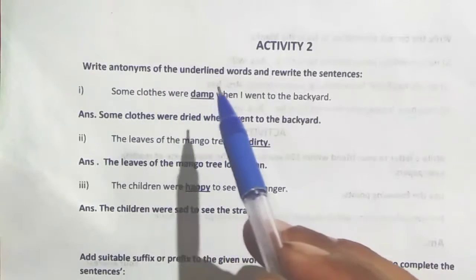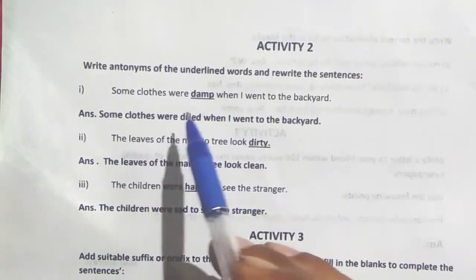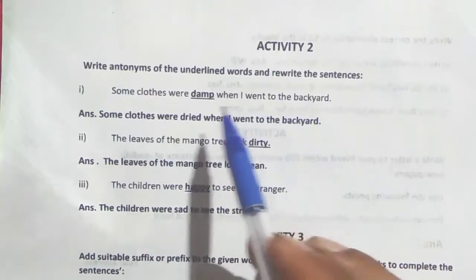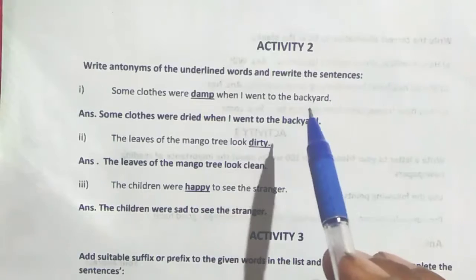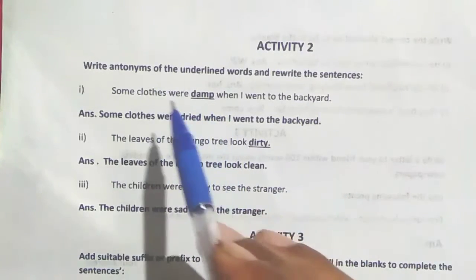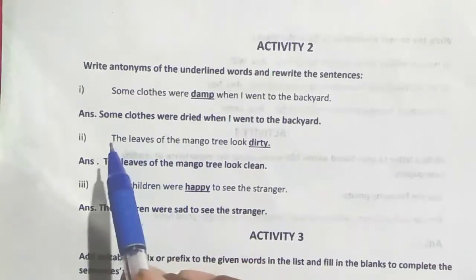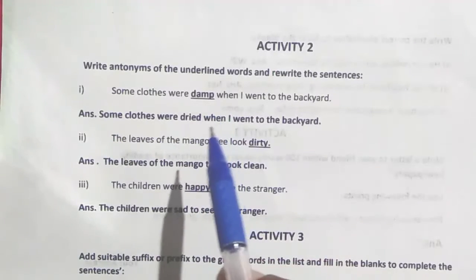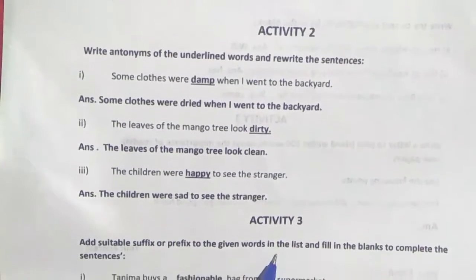Activity: Write antonyms of the underlined words and rewrite the sentence. Number one: 'Some clothes were damp when I went to the backyard' — the antonym of 'damp' is 'dry', so the answer is: 'Some clothes were dry when I went to the backyard.'